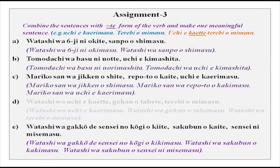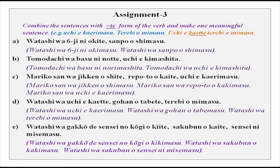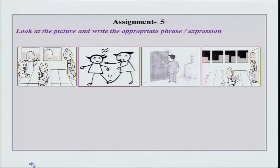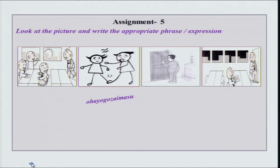You will notice the sentence: watashi wa uchi e kaette gohan wo tabete terebi wo mimasu. In te form, the order is very clearly given — uchi e kaette, gohan wo tabete, terebi wo mimasu. So after this, I will do this and then I will do this. There are also pictures where you have to write expressions or phrases — what do you do in that situation? When you enter your office, classroom, or jimusho — what do you say in the morning? You can see the sun shining bright — it is ohayo gozaimasu, and men just say ohayo by raising their hand.